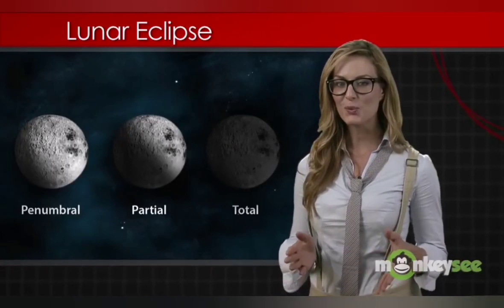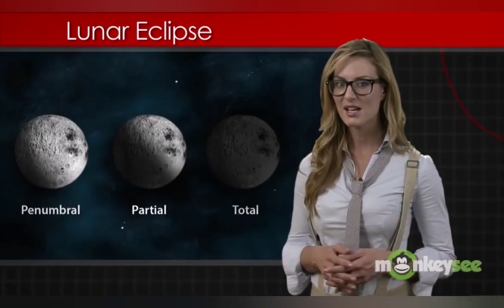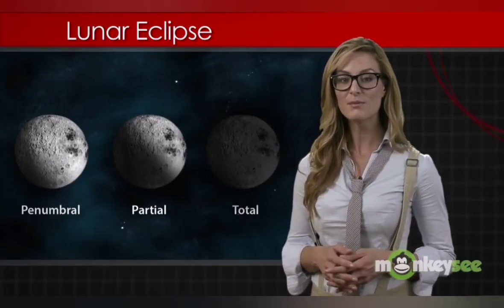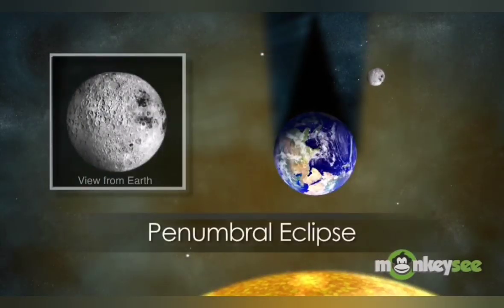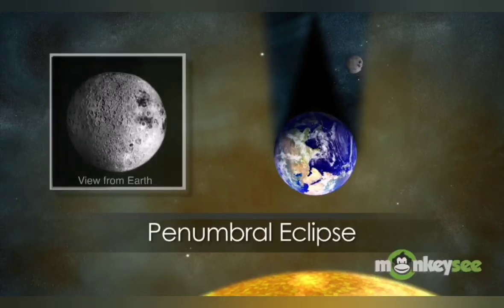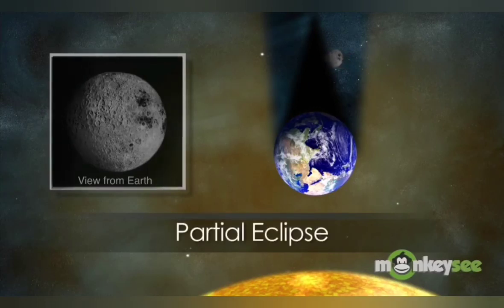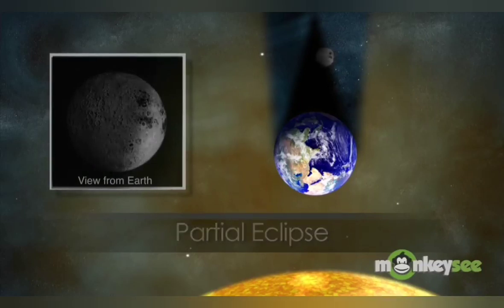Scientists recognize three types of lunar eclipses: penumbral, partial, and total. A penumbral eclipse occurs when only the penumbral shadow hits the Moon, and is very hard to see because all parts of the Moon are still receiving some light. A partial lunar eclipse happens when a portion of the Moon enters Earth's umbra, while the rest remains in the faint light of the penumbra.